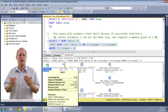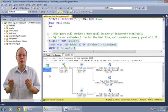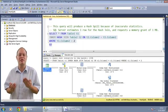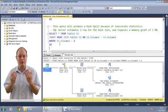Therefore, we encounter the spill to TempDB. That is one of the negative side effects of inaccurate statistics in combination with the hash join.